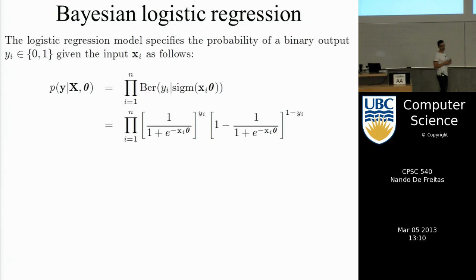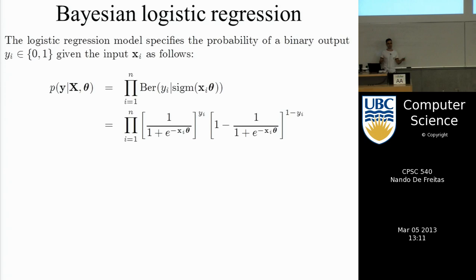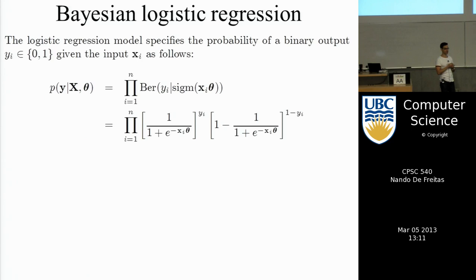Now I want to switch gears and talk about a different way of doing learning — the Bayesian way. In the Bayesian way, we still use a likelihood, but we also specify a prior on the parameters. For linear regression, we had a Gaussian likelihood and a Gaussian prior, and the posterior was also Gaussian. In this case, we will not be able to do it by hand.